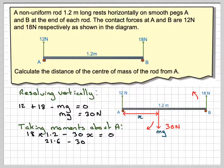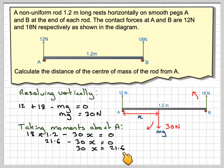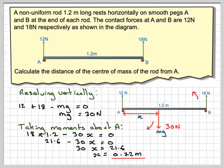Solving that, we're going to have 21.6 minus 30x is equal to 0. Therefore 30x is 21.6. Therefore x will be 0.72 metres away from A.